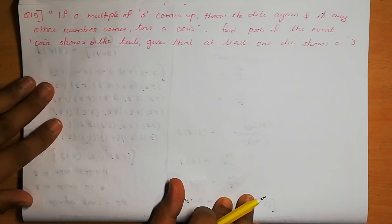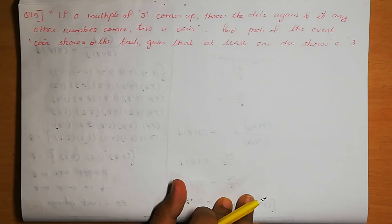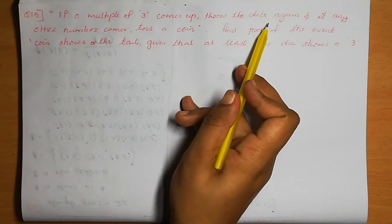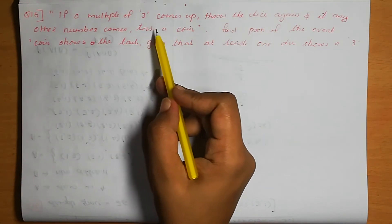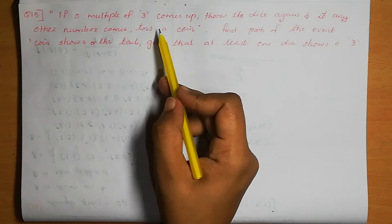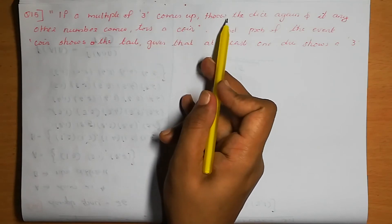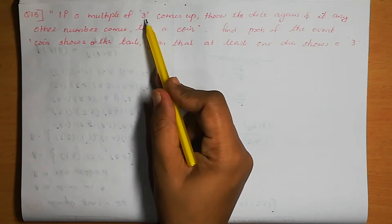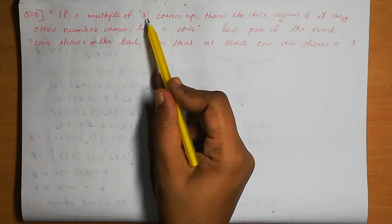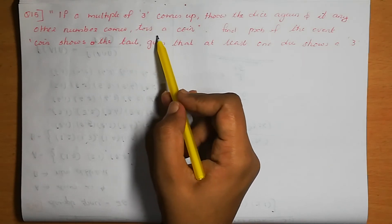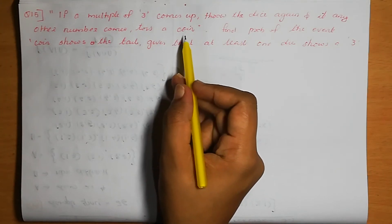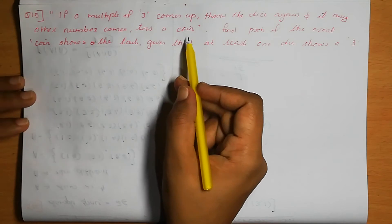Question number 15: Consider the experiment of throwing a die. If a multiple of 3 comes up — that means 3 or 6 — throw the die again. If any other number comes up — that means 1, 2, 4, or 5 — toss a coin. We are going to write the sample space for this experiment.